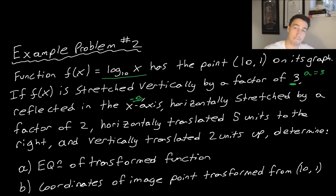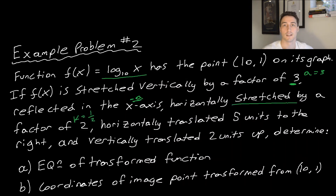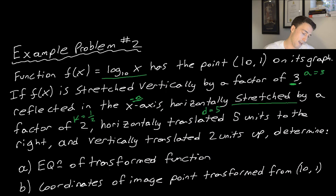k corresponds to horizontal stretching and compression. Since the function is stretched by a factor of 2, k = 1/2, because for a stretch we take the reciprocal of the factor. It's then horizontally translated 5 units to the right, so d = 5. And it's vertically translated 2 units up, so c = 2.